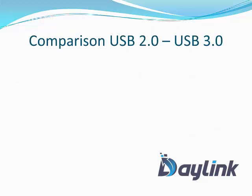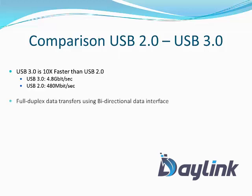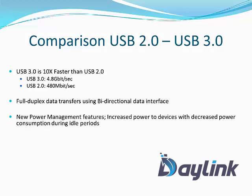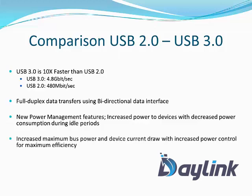USB 3.0 is faster than USB 2.0, as previously discussed. It supports full duplex data transfers using a bi-directional data interface. It also features new power management capabilities, including increased power delivery to devices with decreased power consumption during idle periods, as well as increased maximum bus power and device current draw with improved power control for maximum efficiency.